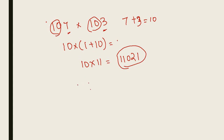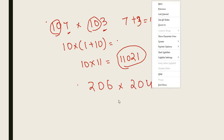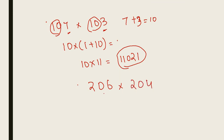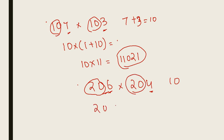Say 206 into 204. As you see, when we add the units place numbers we get 10, and the number at the tens place is same. So 20 into 21 equals 420. And 6 times 4 is 24. So the answer is 42024.